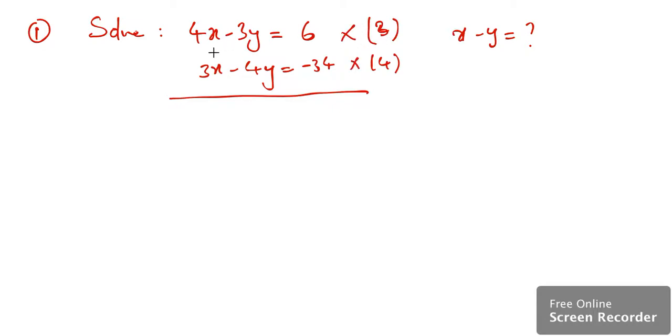This will come down to, if I multiply this entire with 3 just to make one particular coefficient of x or y equal, this is going to give me 12x - 9y = 18. Similarly, multiplying this with 4, it comes down to 12x - 16y = -136.